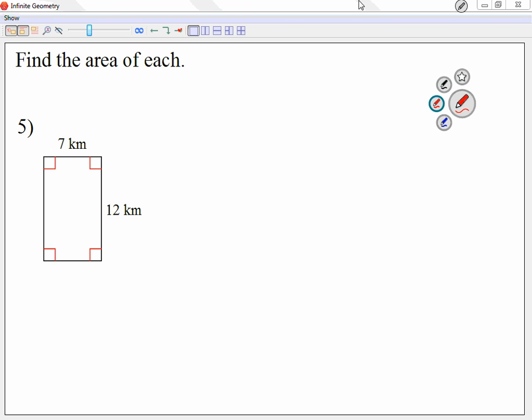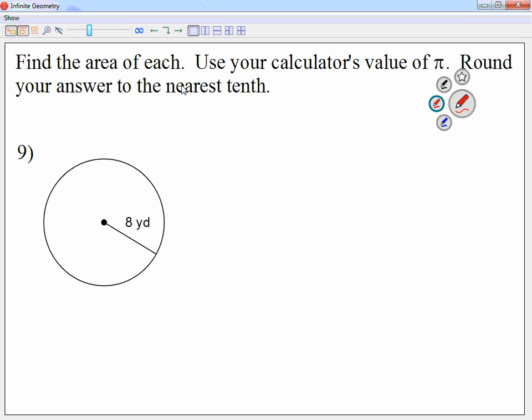Then let me go to question number 9. Question number 9 says find the area of each. Use your calculator's value of pi. Round your answer to the nearest tenth. So the area of a circle, since my radius is 8, I have to go 8 squared because the radius is 8. I have to go 8 squared times pi.